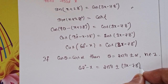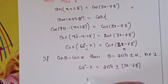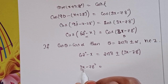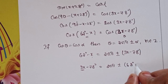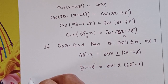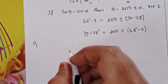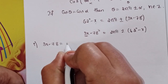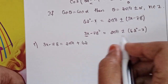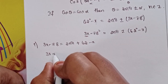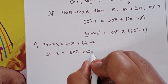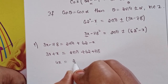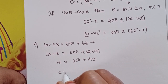Taking 3x - 78° as the larger term, we apply plus or minus. Case 1: 3x - 78° = 2nπ + (62° - x). Rearranging: 3x + x = 2nπ + 62° + 78°. So 4x = 2nπ + 140°.